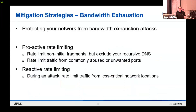For bandwidth exhaustion attacks, you can do proactive rate limiting — especially for fragmentation attacks and abusing unwanted port activity, making sure those are blocked and rate limited. You can also do reactive rate limiting: after detecting a DDoS attack in progress, you can rate limit less critical network locations. For example, if you're running a service primarily accepting traffic within Thailand or your own country, you may be able to rate limit connections coming from other countries — rate limiting international connections which are less critical than your domestic hosted customers.